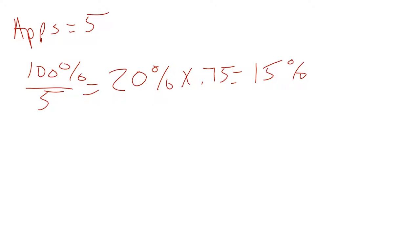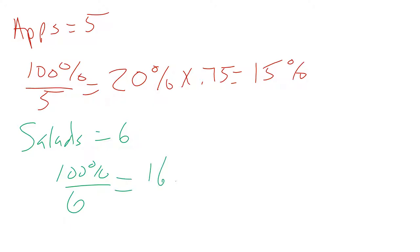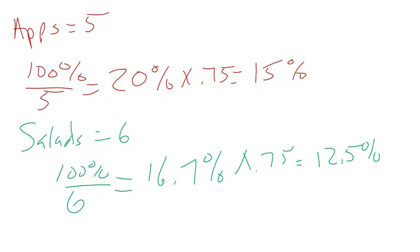Next category: salads. We have six salads, so 100% divided by 6 gives us 16.7% — that's the average percentage. Multiply that by 75% again and we get 12.5%. So our appetizer benchmark is 15% and our salads benchmark is 12.5% because we have more salads. The more items you have, the lower the average percentage will be.